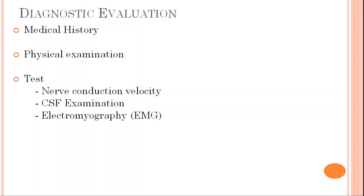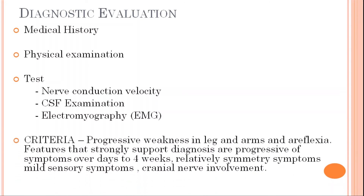The criteria for GBS is that there is progressive weakness in legs and arms and areflexia. Features that strongly support the diagnosis are progression of symptoms over days to four weeks, relative symmetry of symptoms, mild sensory symptoms, and cranial involvement.